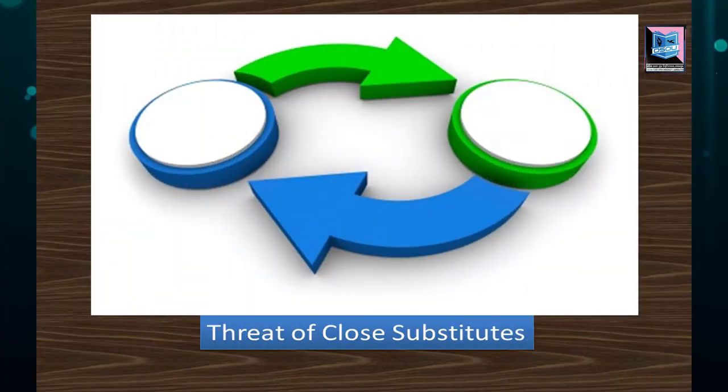In the case of threat of substitution, substitution means a similar product can replace your product. Like tea can substitute coffee, or coffee can substitute tea. In that manner, substitution is also a threat. Some cross products can be substituted — tea and coffee are an example of cross product substitution. That is also a threat. When some companies can offer a similar kind of product at a low cost, your product is in danger because they can give a similar product to the market at a lower price.